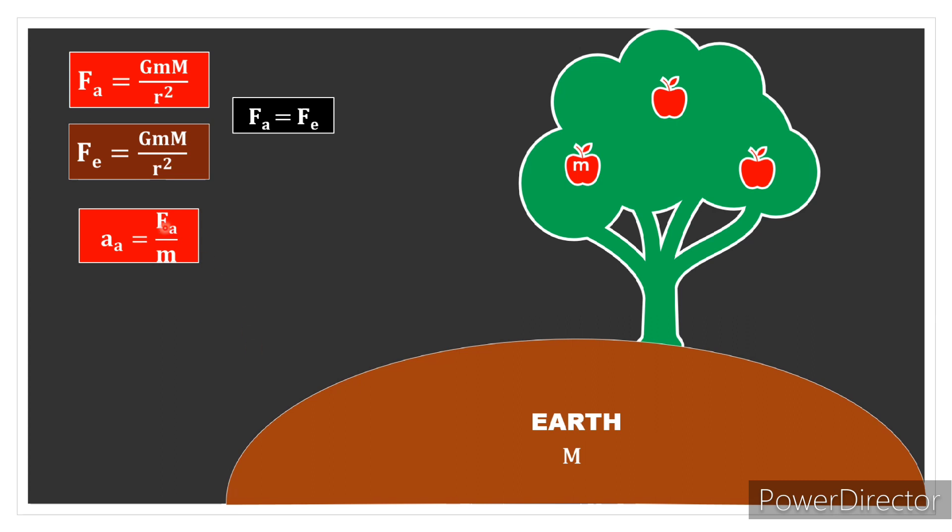Force is the same, but acceleration is different. Acceleration equals force divided by mass. The acceleration of the apple is the force acting on the apple divided by the apple's mass, F_a/m.